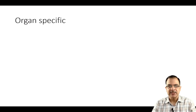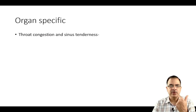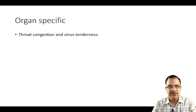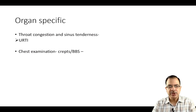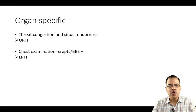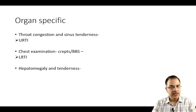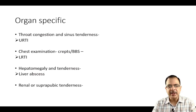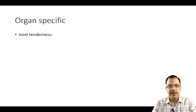Coming to organ-specific signs — throat congestion and sinus tenderness: always check the throat for any erythema or congestion and palpate the sinuses for tenderness, which is suggestive of upper respiratory tract infections. On chest examination, bronchial breath sounds or crepitations are suggestive of consolidation — that is pneumonia — seen in lower respiratory tract infections. For the abdomen, hepatomegaly with tenderness could be liver abscess; renal or suprapubic tenderness is seen in urinary tract infections.